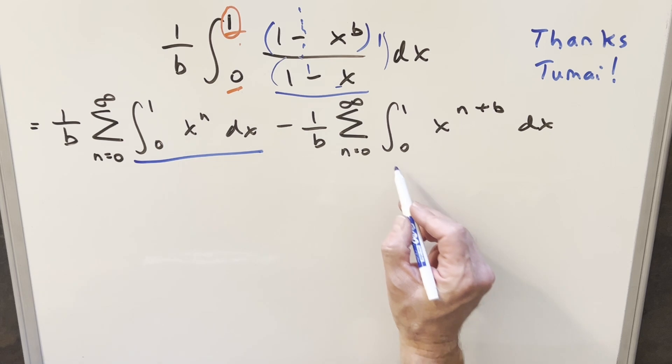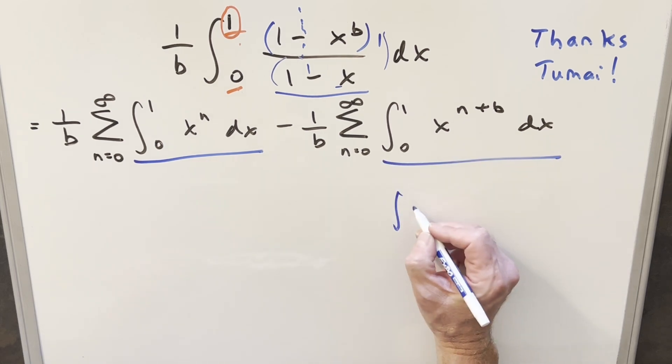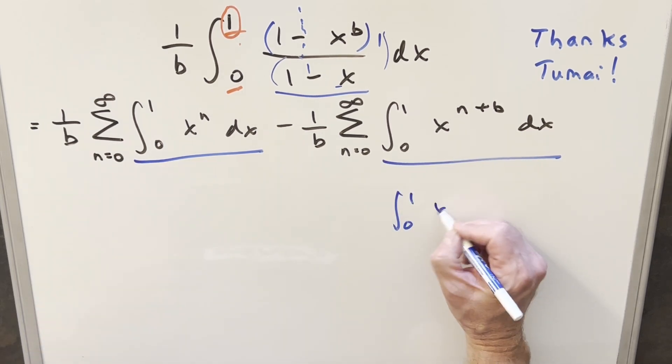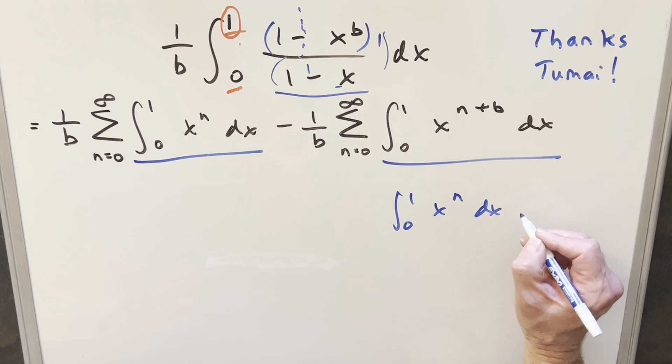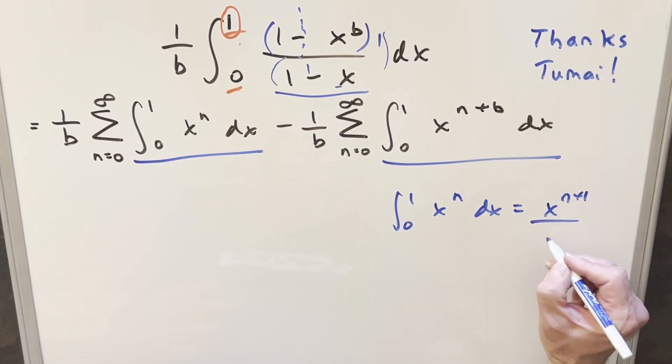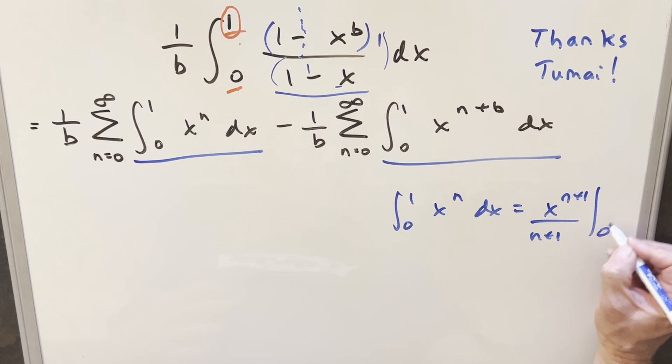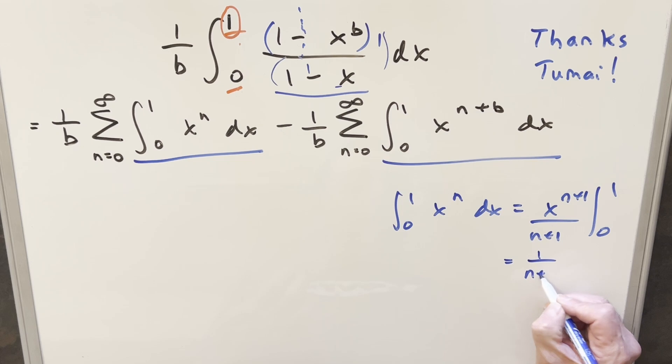Now let's do both these integrals. So here we have the integral from 0 to 1 of x to the n. We use power rule, we get x to the n plus 1 over n plus 1 evaluated from 0 to 1. When you plug in 0, it's just 0, so you plug in 1 and you get 1 over n plus 1.